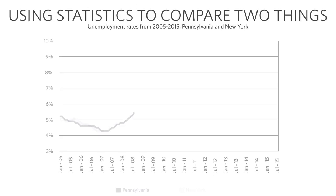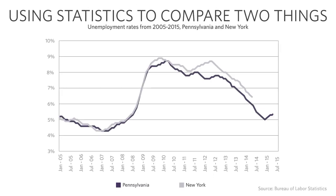We have here the unemployment rate for Pennsylvania over time, January 2005 through July 2015. You can see the unemployment rate is sometimes low, sometimes high. You can see the big bump from the 2008 recession and then coming back down again. That's the unemployment rate over time for Pennsylvania.